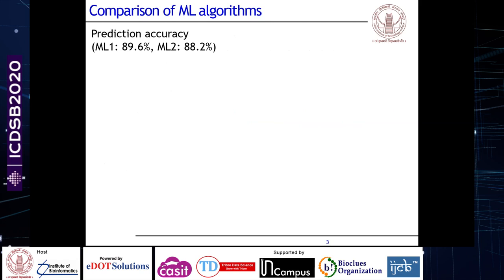When we talk about comparison of machine learning algorithms, there are a few aspects that come to mind. The first is prediction accuracy. For example, ML one achieves 89.6% accuracy and ML two achieves 88.2% accuracy — these are the kinds of numbers you see in many studies and papers. What we want to understand is: does ML one really perform better than ML two? Prima facie, yes, because it has higher accuracy. But there are a few more things to consider before making those conclusions.